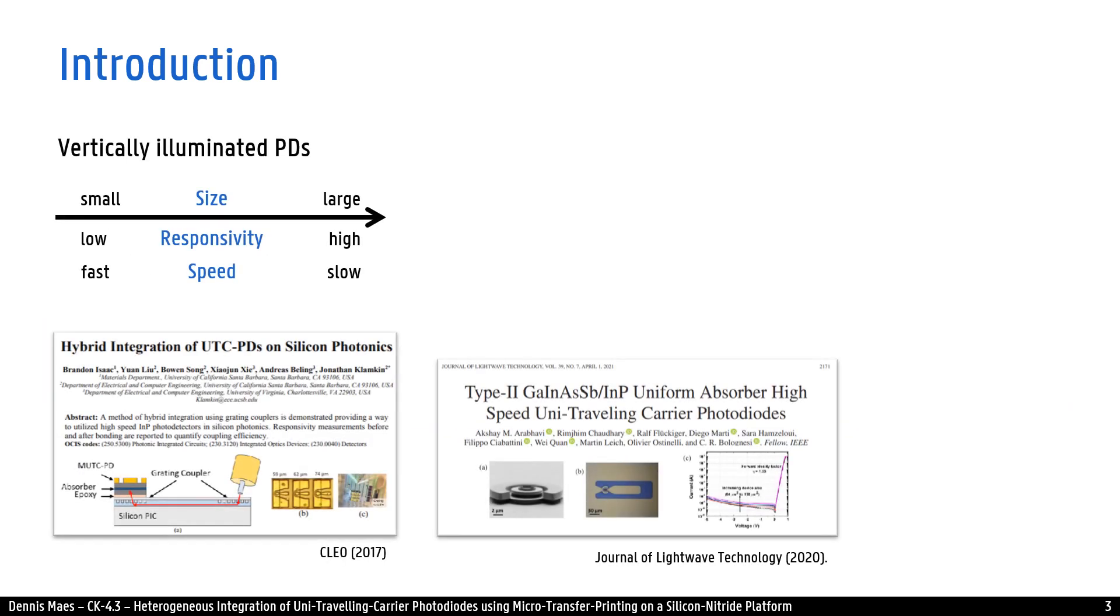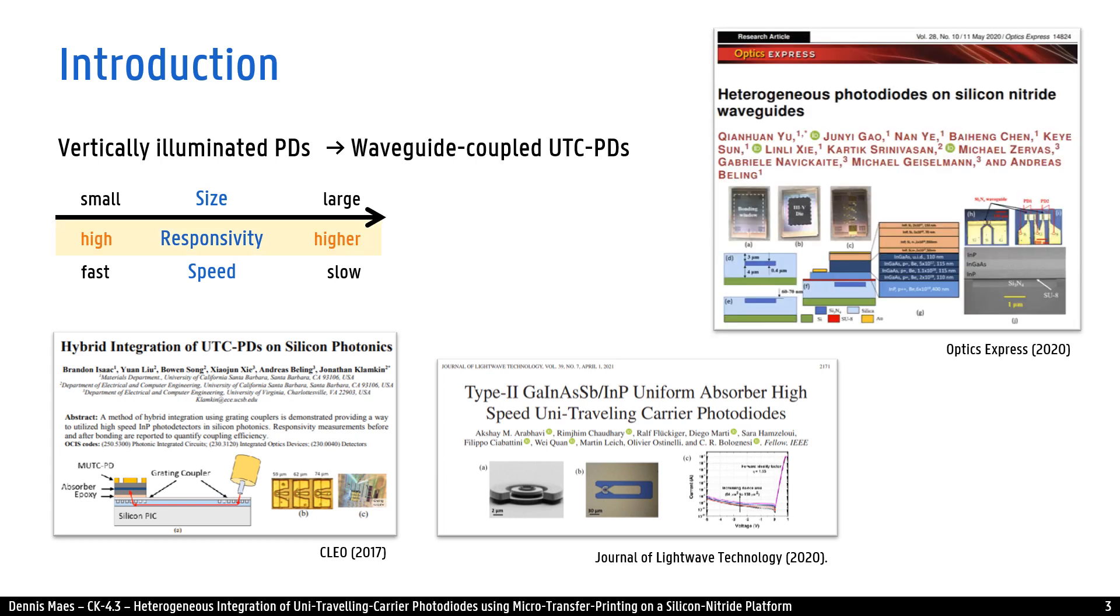But all vertically illuminated photodiodes suffer a fundamental trade-off. In order to achieve a high responsivity the device needs to be large. This in turn results in a slow device. However, by coupling light evanescently into the photodiode, also small devices can achieve a high responsivity.